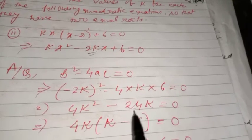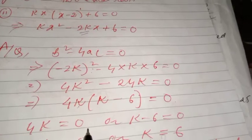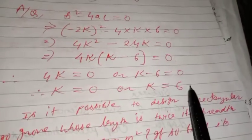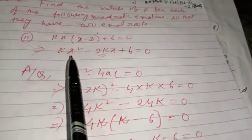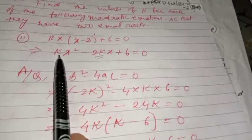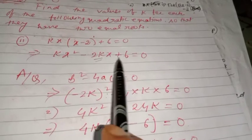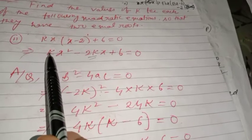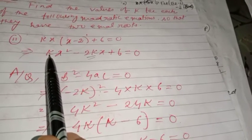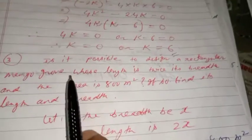Taking 4k common: 4k(k−6) = 0. So k = 0 or k = 6. If k = 0, the equation becomes 0, which is not a quadratic equation — the degree would not be 2. Therefore k = 0 is rejected and the correct answer is k = 6.